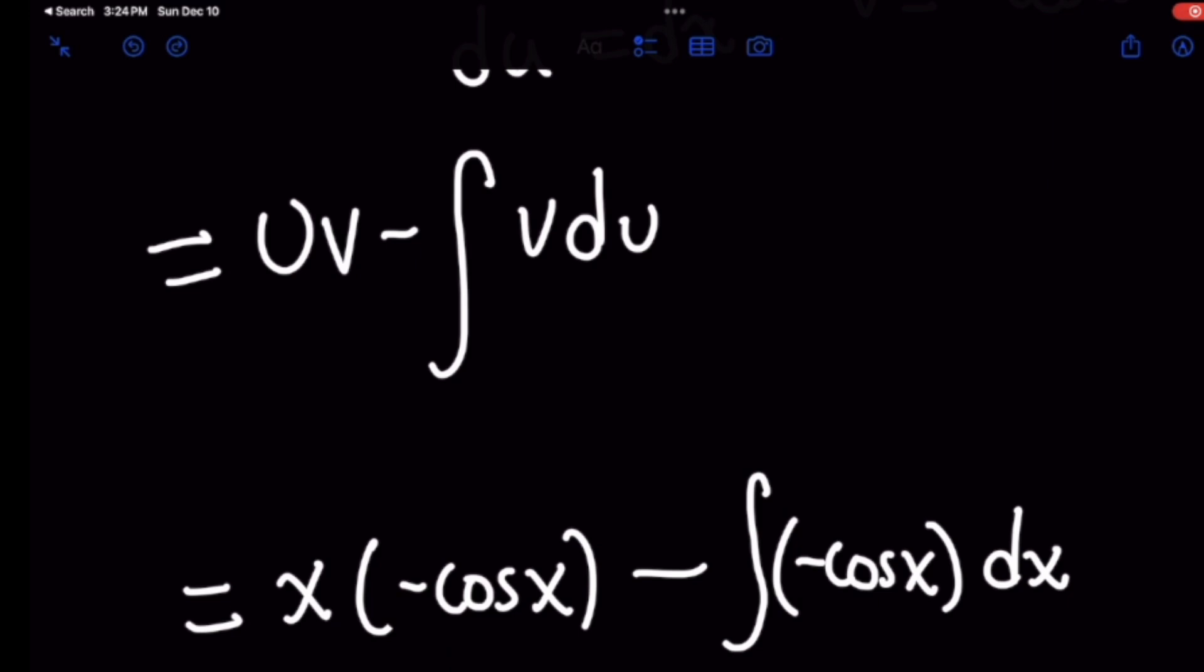This looks like it's a harder thing to solve but it actually isn't because x times negative cosine of x simply gives you negative x cosine of x which is going to be part of your final answer. There's nothing left to integrate there.